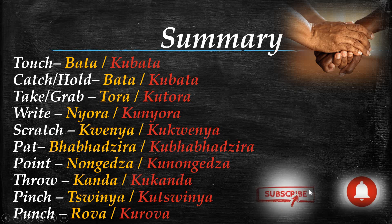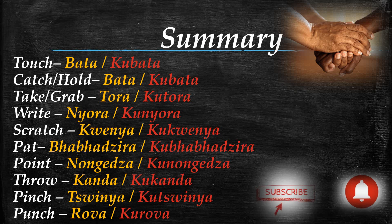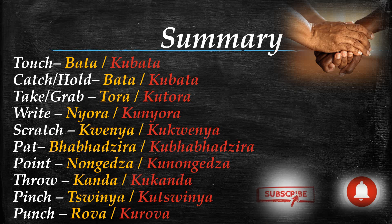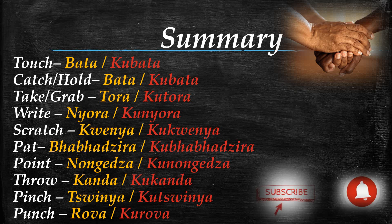Pet is Babazira. Point is Nongedza or Kunongedza. Throw is Kanda or Kukanda. Pinch is Tsukunya or Kutsukunya. Punch is Rova or Kurova.